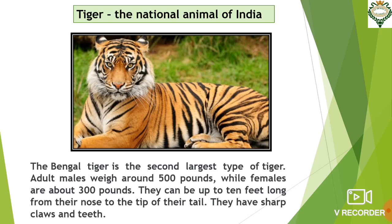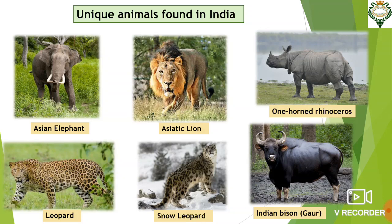They have sharp claws and teeth. The Royal Bengal tiger is found in India — it is unique to India. Other unique animals found in India are Asian elephants, Asiatic lions, one-horned rhinoceros, leopards, snow leopards which are only found in the Himalayas, and Indian bison. These are some of the famous and unique animals found in India.